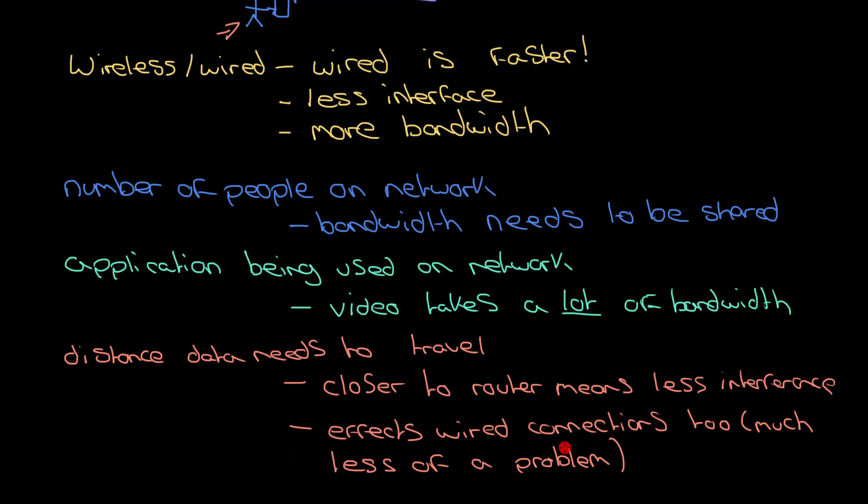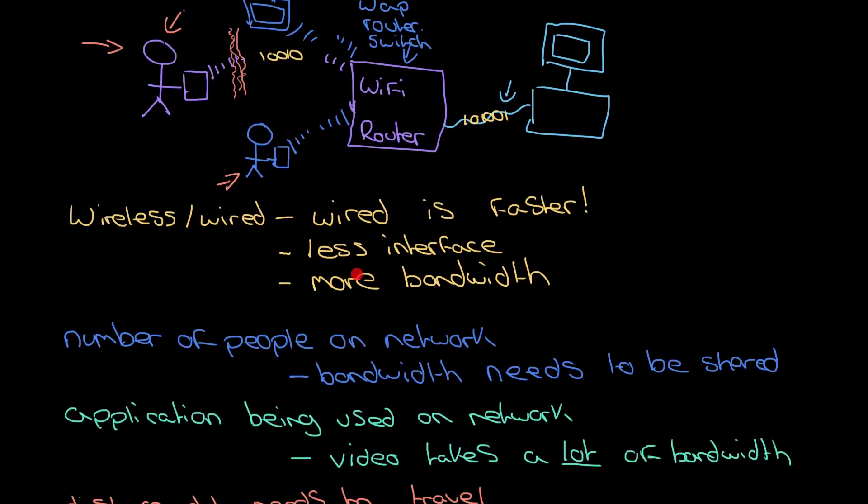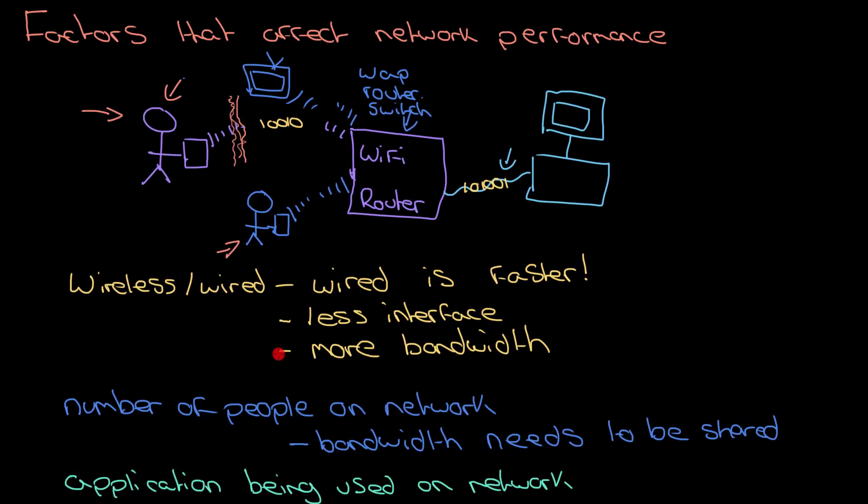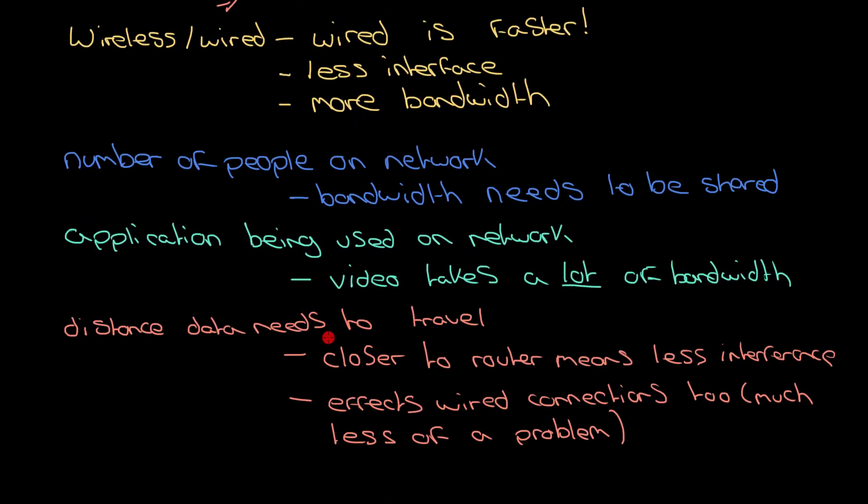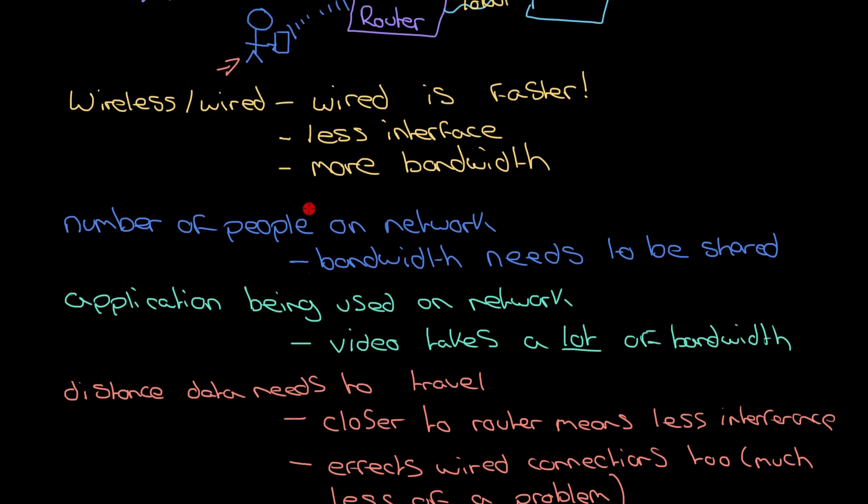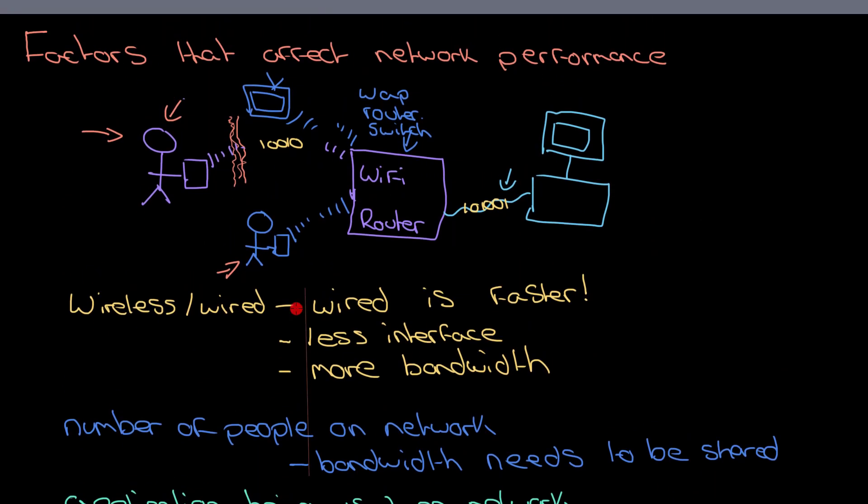So that is something to consider as well, but they're your main things. You've got the fact that you've got a wired or wireless network is one of the major things that affects network performance, the number of people and what they're doing on it, and also the distance you are to your wireless access point or to your switch and your hub. If you have all those things sorted, then you can have a happy network and browse as much high definition video as you would like.